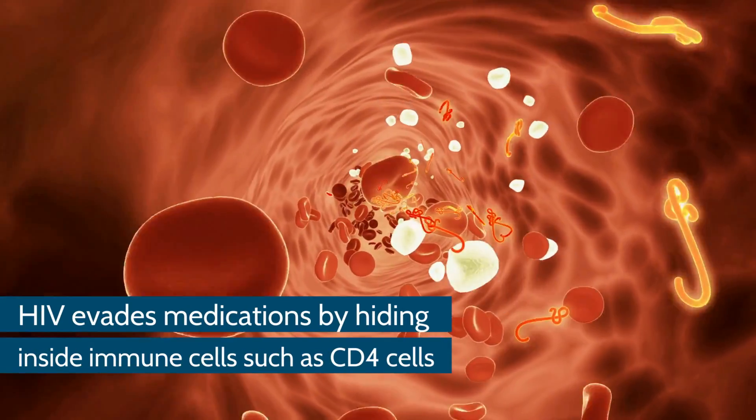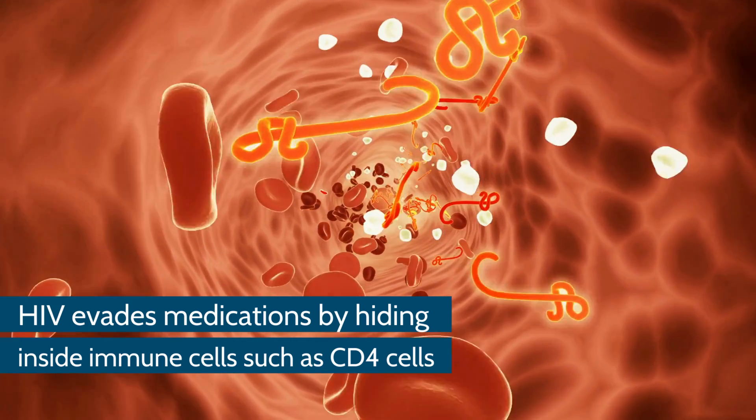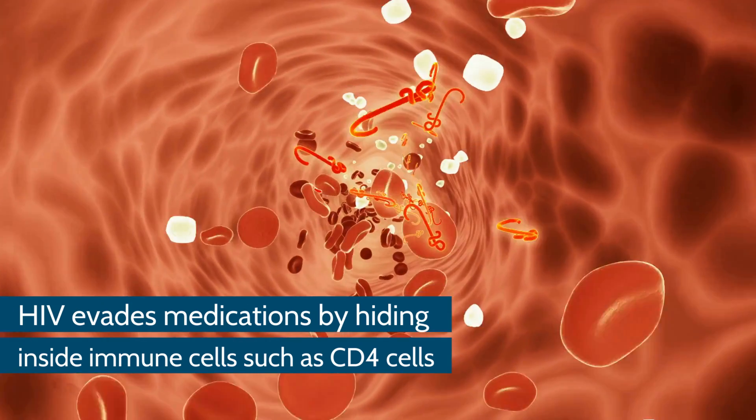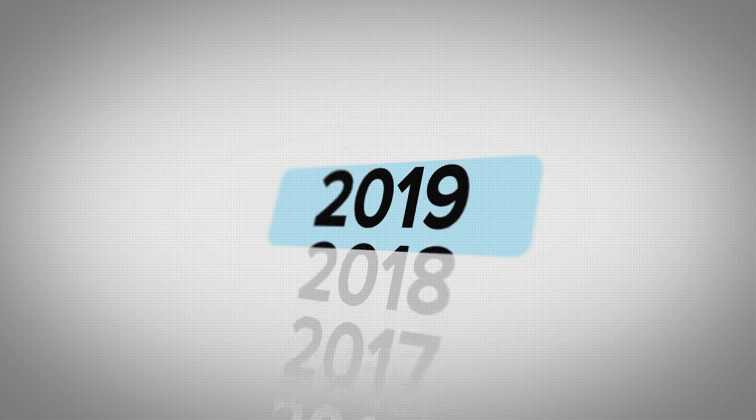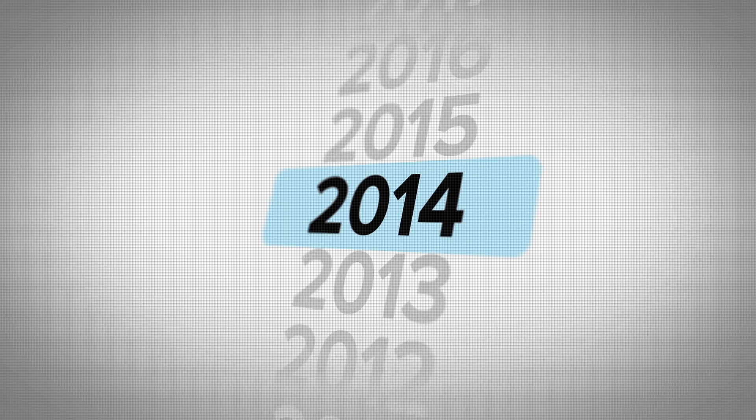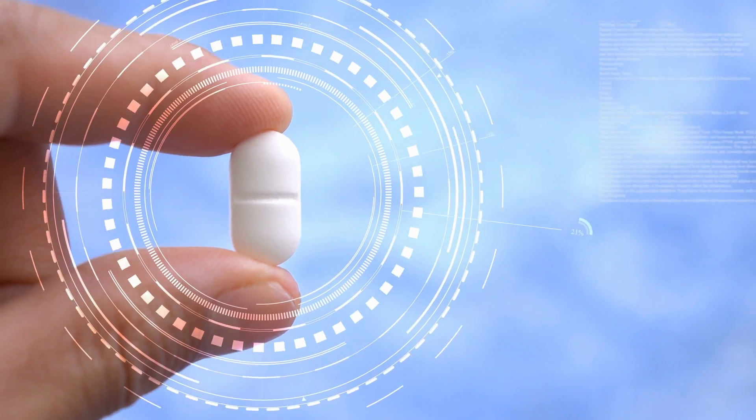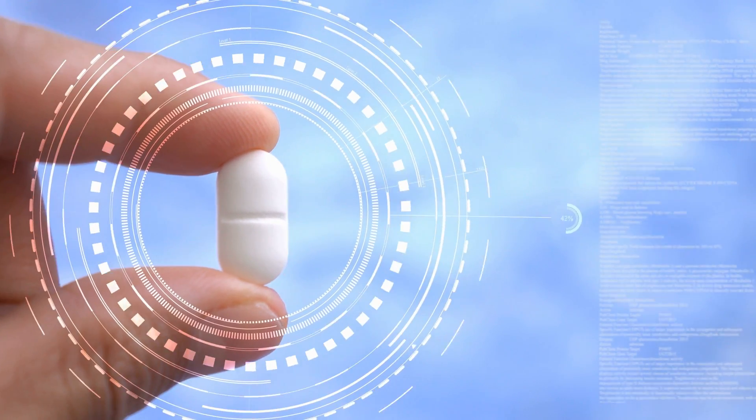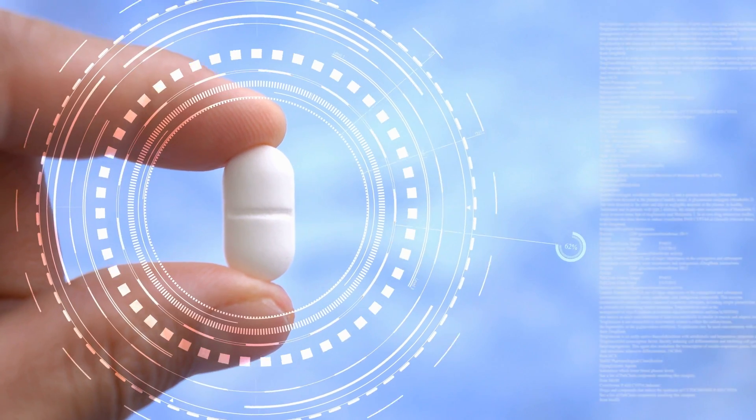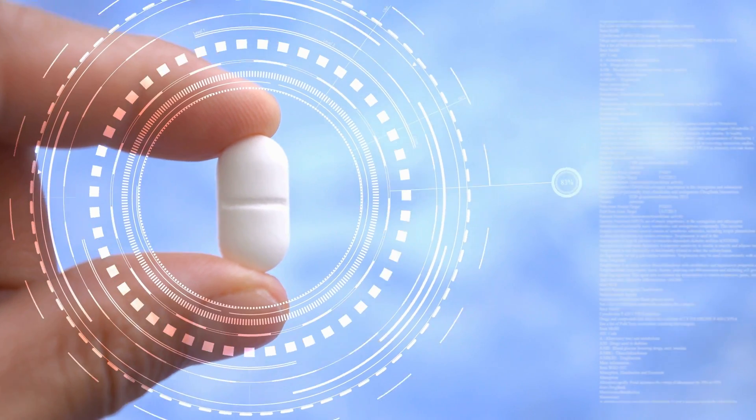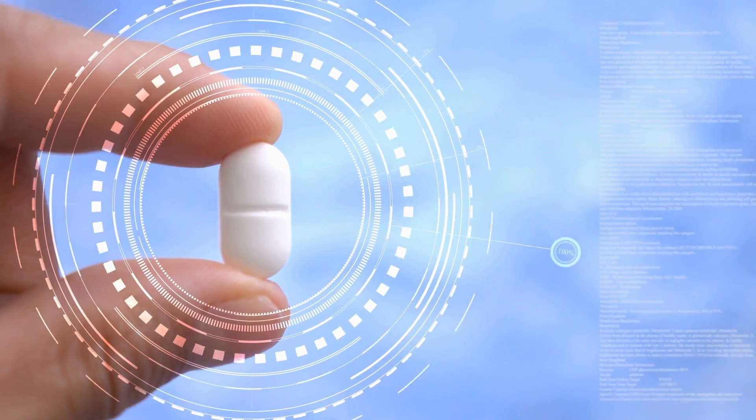HIV can remain hidden and inactive inside CD4 cells for months or even years, making it impossible for the immune system to recognize it. In addition, antiretroviral medications, which are typically used to hinder the virus's progression and multiplication, cannot have an effect on it whilst it's hidden and dormant.